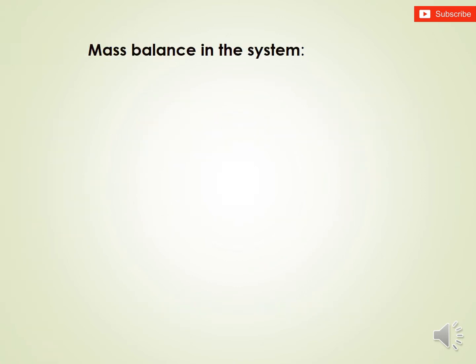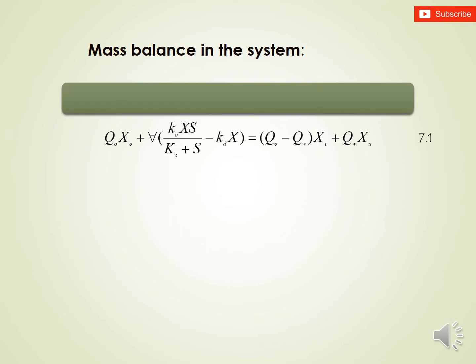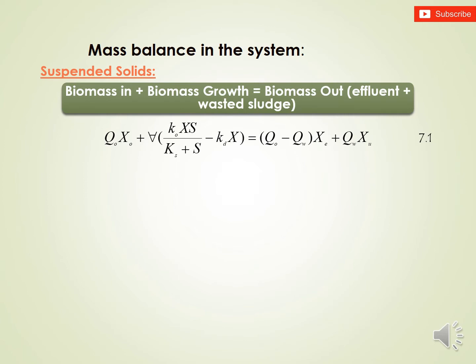First of all, we have to achieve a mass balance in the system. Mass balance means the inputs equal the outputs. For the activated sludge system, we will make two kinds of mass balance. First, mass balance of suspended solids, which means the biomass, which means the microorganisms. Biomass in plus the biomass grown in the aeration tank should equal the biomass out — the biomass leaving with the effluent plus the biomass wasted as sludge.